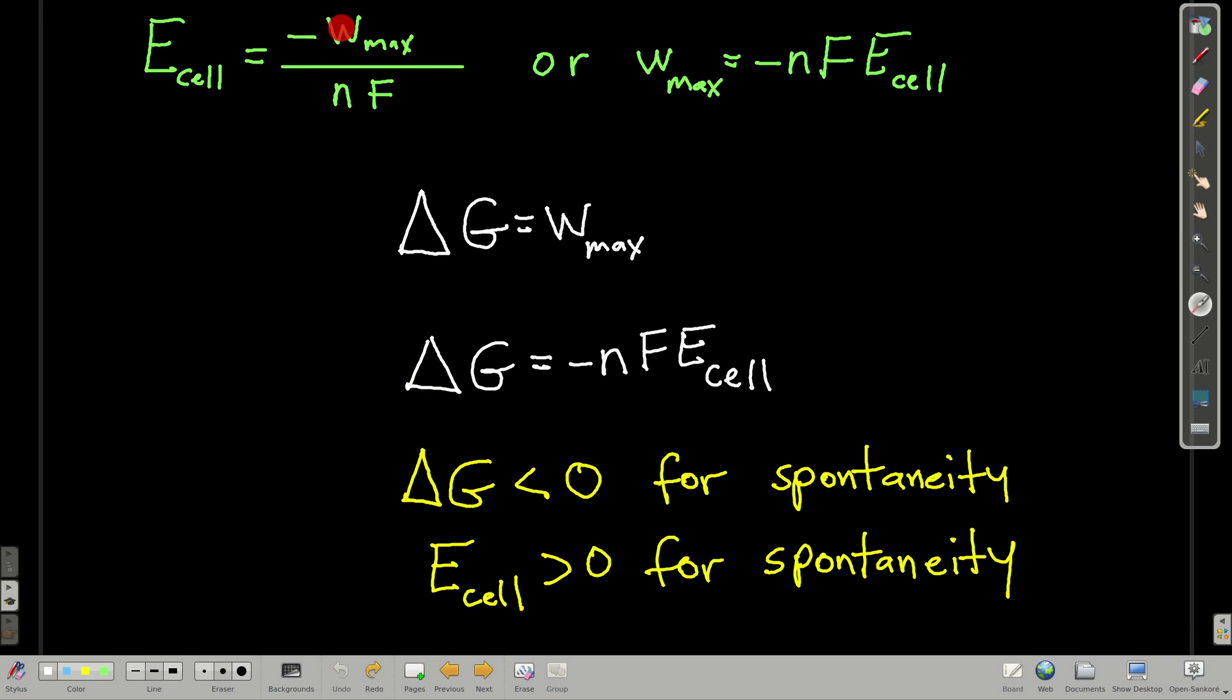Now, the E of the cell is equal to the work max, and that's the maximum amount of work that can be done. In real life, any galvanic cell will do less work than this number because there's always some loss, some dissipation, some friction. You can never absolutely perfectly convert all of this potential into work. And the charge is nF. So if we rearrange it, we see that the maximum amount of work that can be done by a cell is equal to negative nFE.